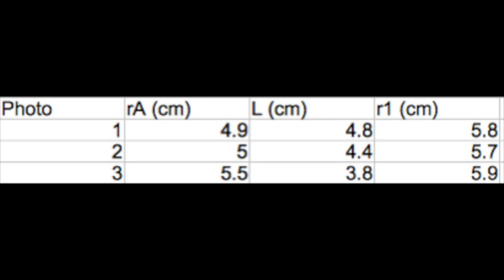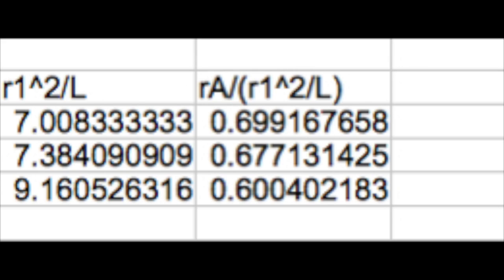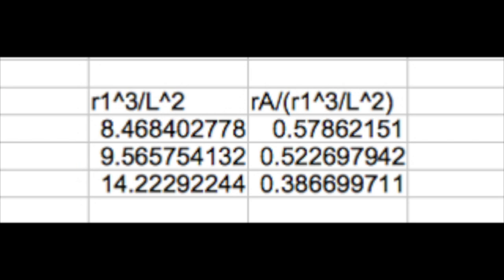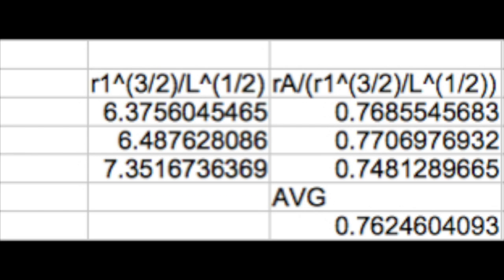We do know, however, that RA over R1 alpha times L beta should be constant if alpha and beta are correct. Now, I tried a few likely options. R1 to the second over L, R1 to the third over L squared, and R1 to the 3 halves over L to the 1 half. Of these three options, R1 to the 3 halves over L to the 1 half gave the values that seemed most consistent with creating a constant value relative to RA.